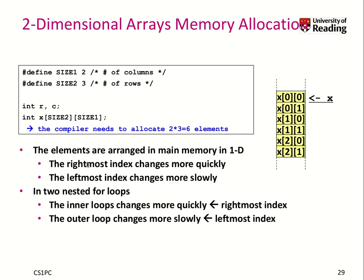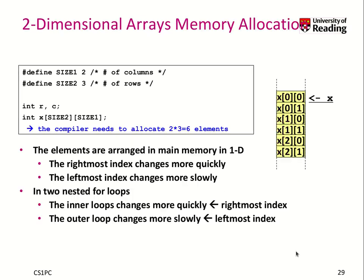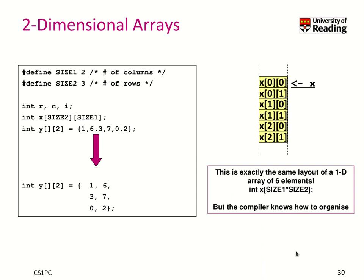So we can say the rightmost index changes more quickly or should change more quickly, and the leftmost index should change more slowly. And that's then a good access pattern exactly as we've done it here, which is efficient. And we basically followed exactly the order as the data is stored in memory.